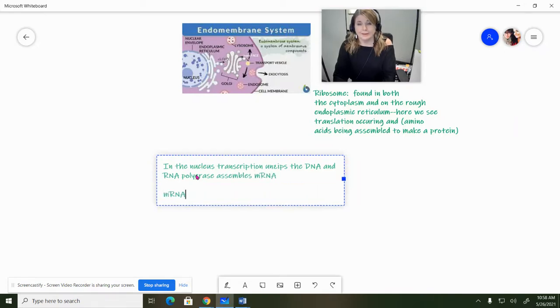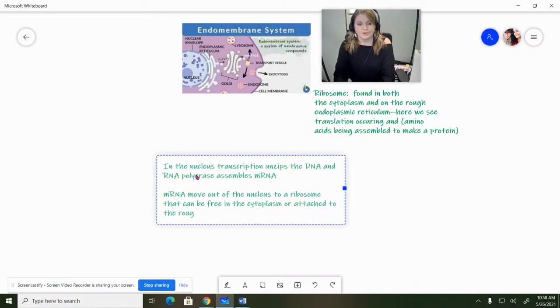Then the mRNA, I know it has to go through revision and stuff like that, but we don't really need to know that part. So it's going to move out of the nucleus to a ribosome that can be free in the cytoplasm or attached to the rough ER.